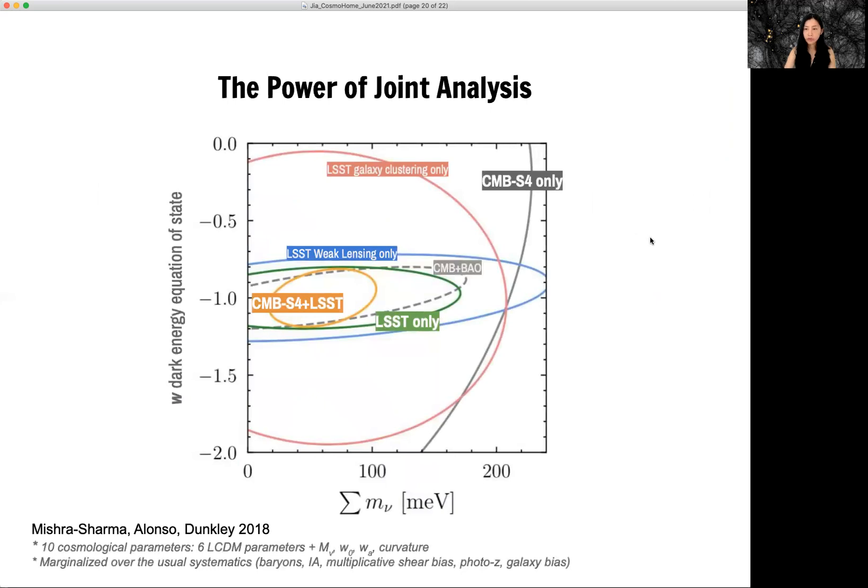One point I want to mention is back to two-point analysis only. In the future, in order to discover neutrino mass, we have to combine multiple cosmological tools.